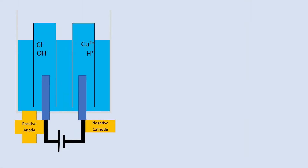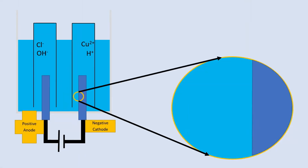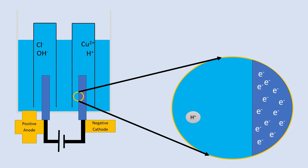If we zoom in and have a look at what's happening at the negative electrode, we can see that it has lots of electrons on it. This attracts the hydrogen ion, but it's way too reactive so it doesn't do anything.